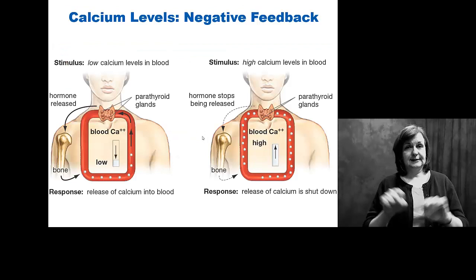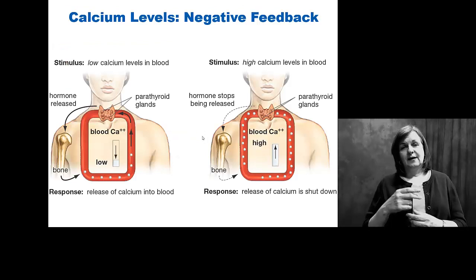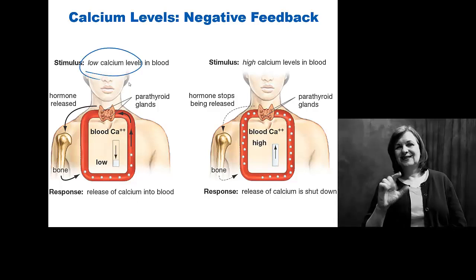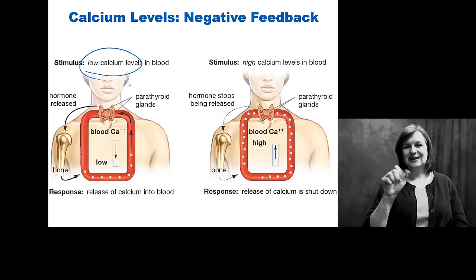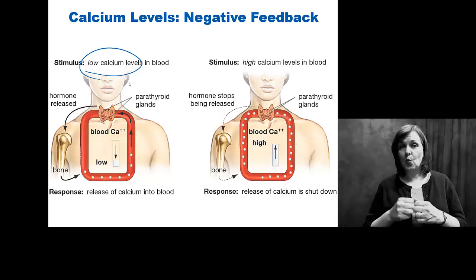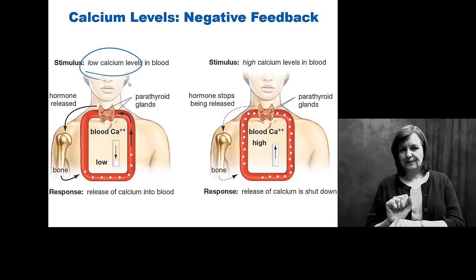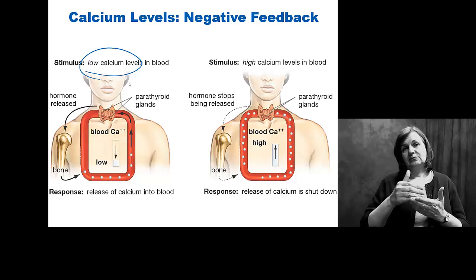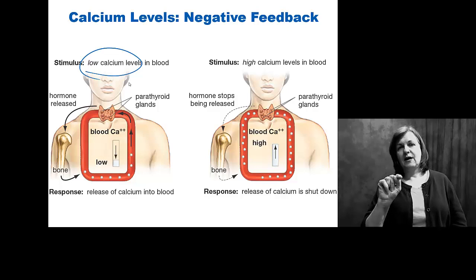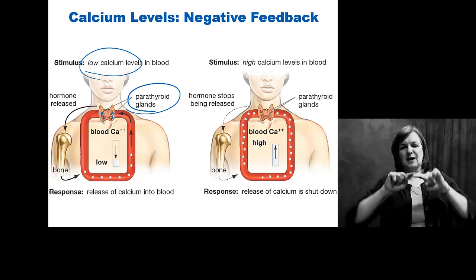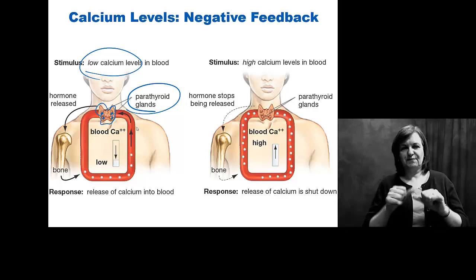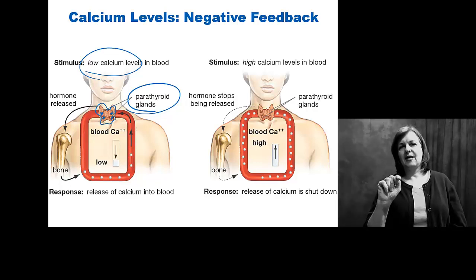An example of a negative feedback system: if you have low calcium levels in your blood, you are dependent on calcium — not just for bone growth, which everyone associates it with. You need calcium to fire every single neuron in your body. So when calcium levels in the bloodstream are low, your parathyroid gland — these little tiny dots that sit on your thyroid, the big butterfly-shaped structure — monitor your bloodstream for calcium.